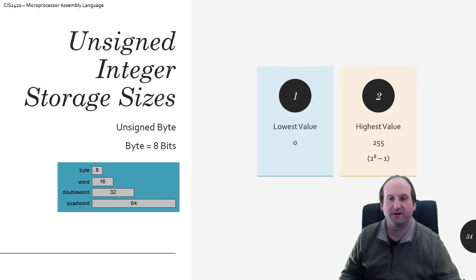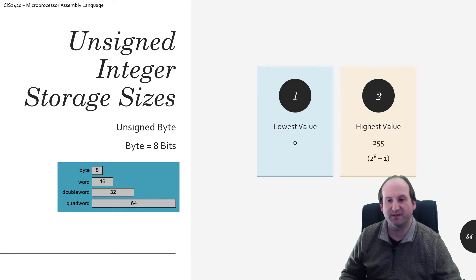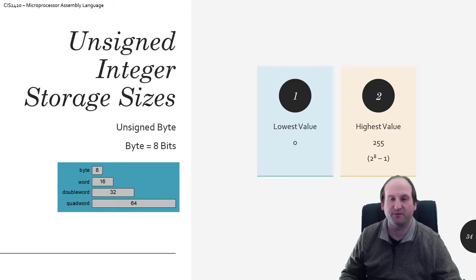The little chart here on the left-hand side pretty much shows us all of what assembly language has to offer when it comes to variables of different sizes. So we're going to be dealing with bytes, words, double words, and quad words — we'll take a look at all four of these.